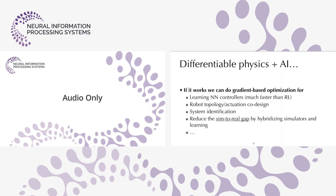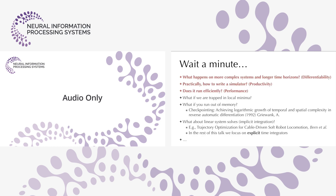Gradient-based optimization is very powerful and gives fine-detailed structure. That's differential physics for classical applications. Today the focus is differential physics plus AI. If this works well, we can learn neural network controllers much faster than reinforcement learning, do robotic topology and actuation co-design optimizing both controller and geometry, do system identification measuring physical properties by watching a video, and reduce the sim-to-real gap by hybridizing simulators and neural networks end-to-end.